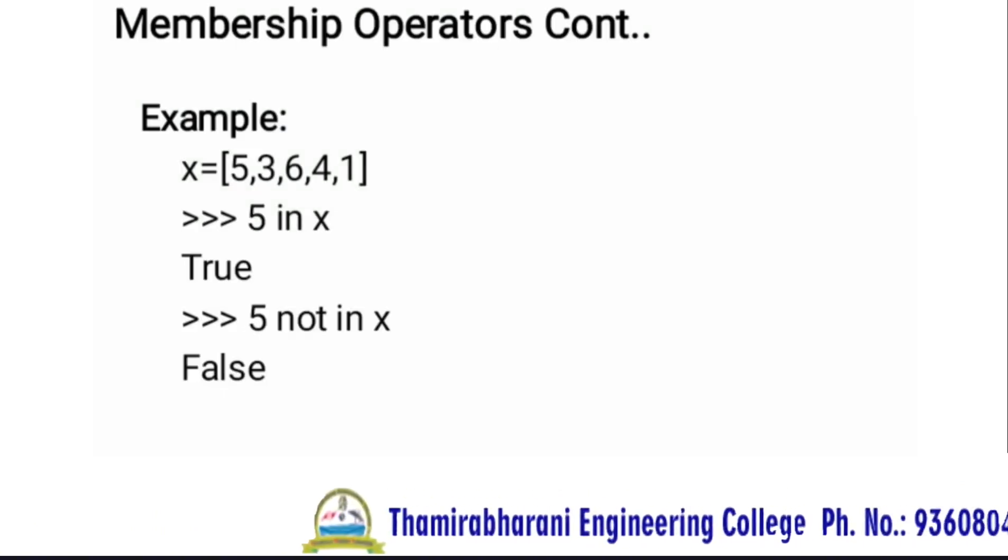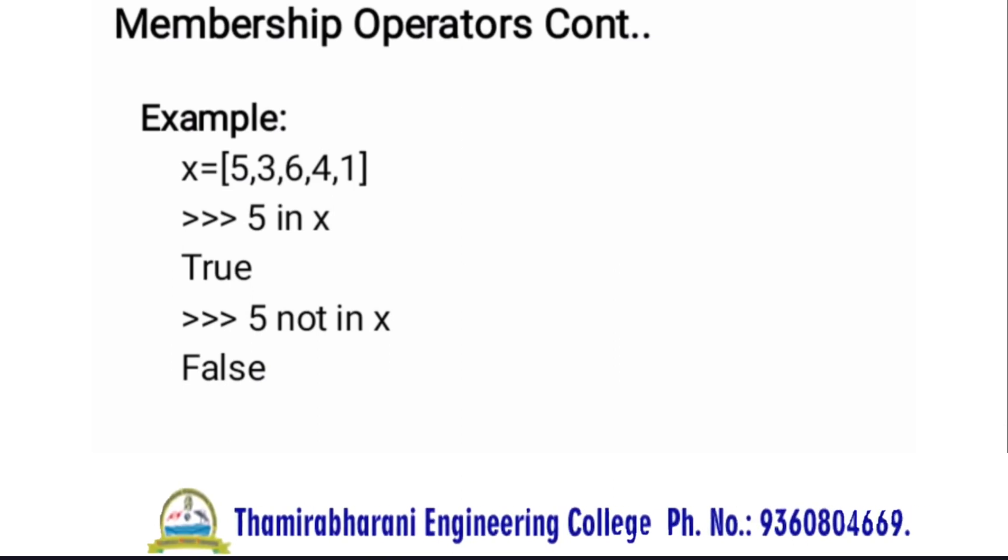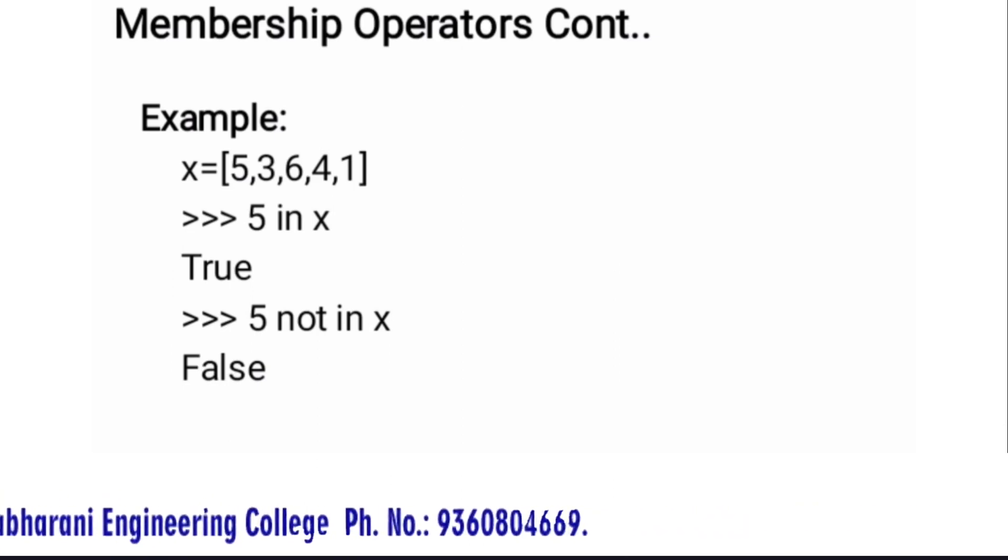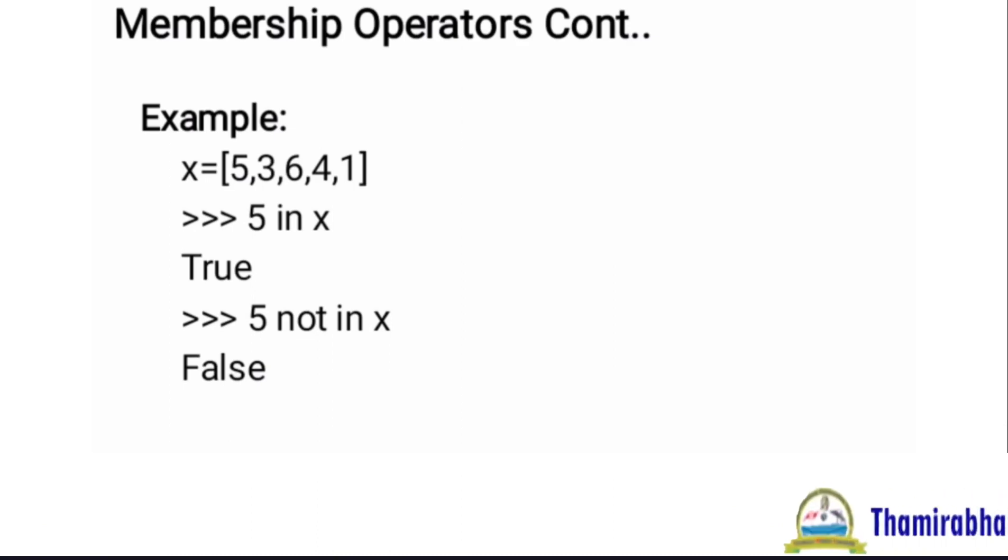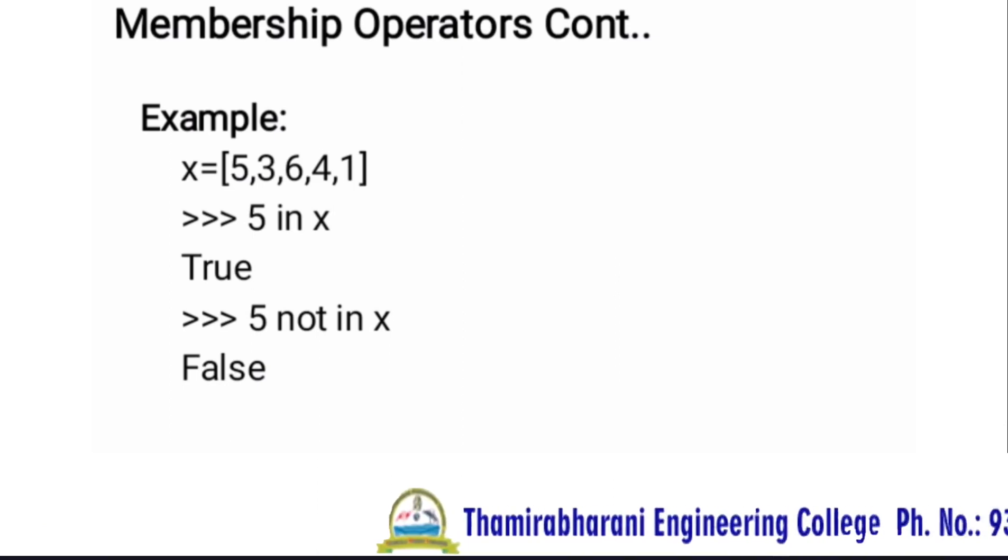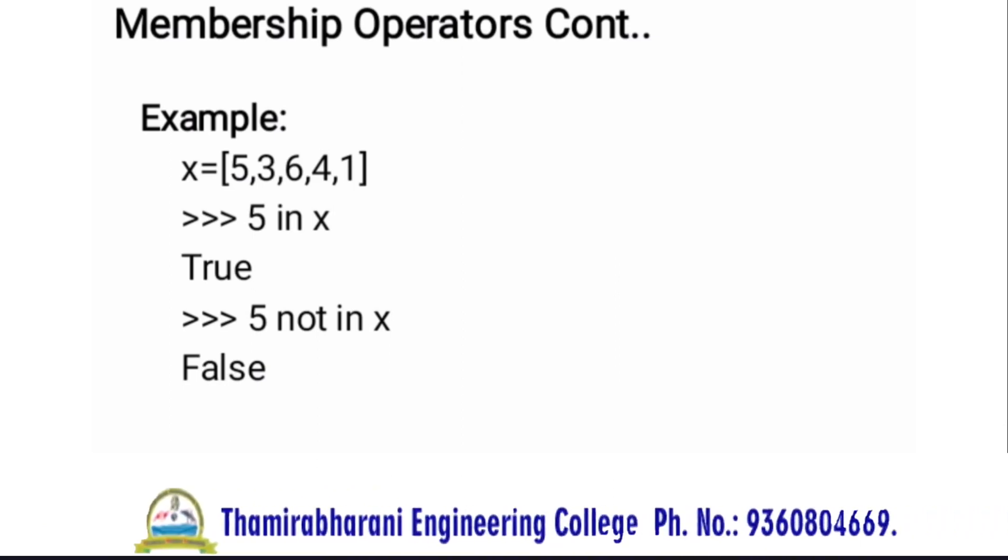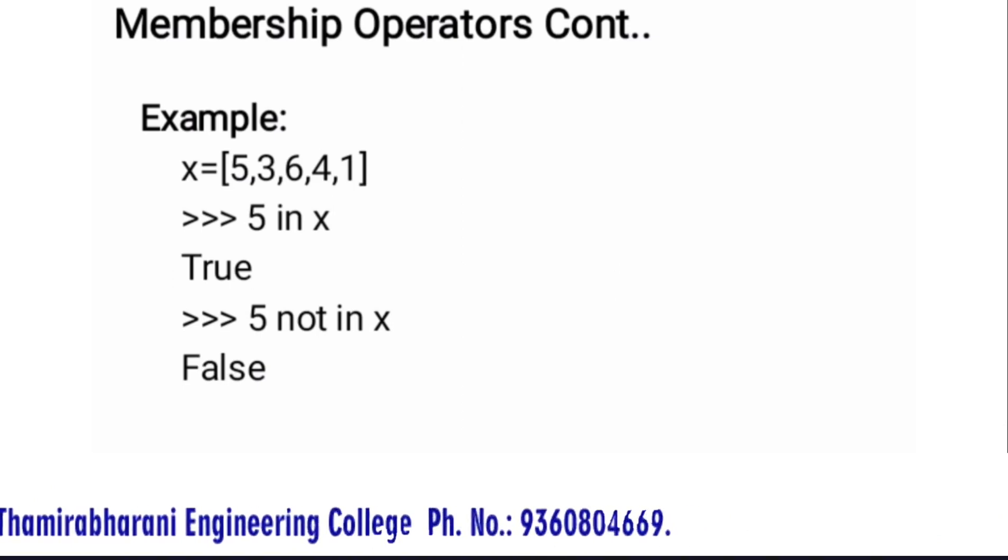Example program for membership operators: x equals [5, 3, 6, 4, 1]. Next, I check whether 5 is present in this list using '5 in x'. The result is True. If the element is found, then the result will be True. Next, I check '5 not in x'. Here the result will be False because 5 is present in the list.